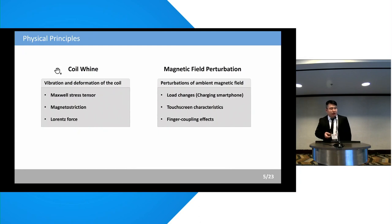Specifically, the coil whine is caused by the vibration and deformation of the coil in the electromagnetic field, resulting from the Maxwell stress tensor, magnetorestriction, and the Lorentz force. And the magnetic field perturbation is caused by the load changes of the charging smartphones, and the finger-coupling effect due to the characteristic of the touchscreen, which emits EM signals that may perturb the ambient magnetic field.